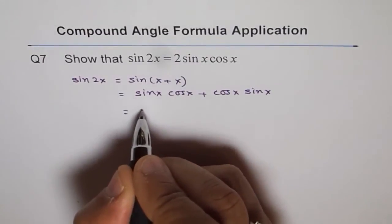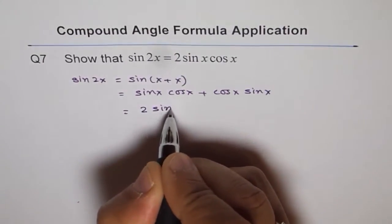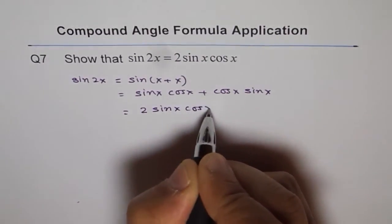Correct? Now that gives me 2 sin x cos x. Perfect.